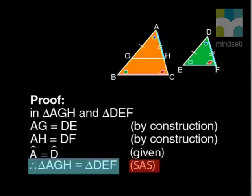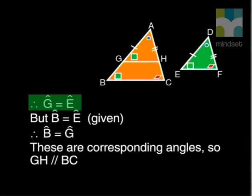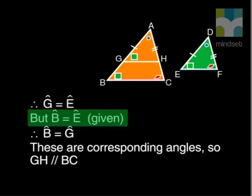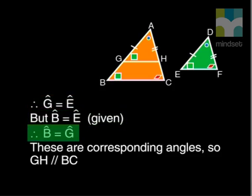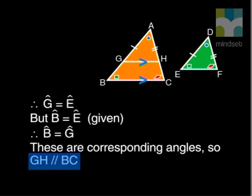Therefore, the remaining angles G and E are equal. But B is also equal to E. And so, B equals G. These are corresponding angles. So, GH is parallel to BC.